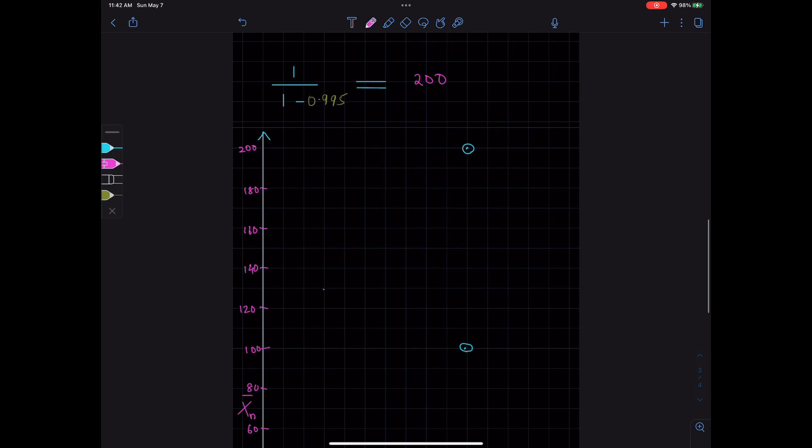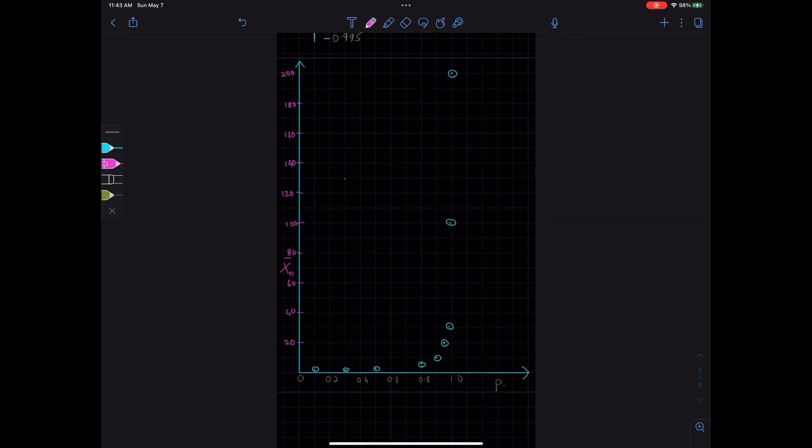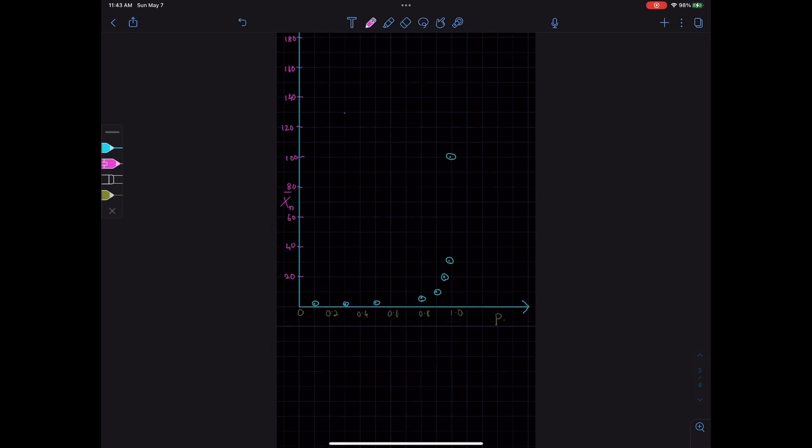We see that the degree of polymerization increases slowly first, and then towards when P tends to 1, it rises very fast. So the graph of P versus Xn is exponential.